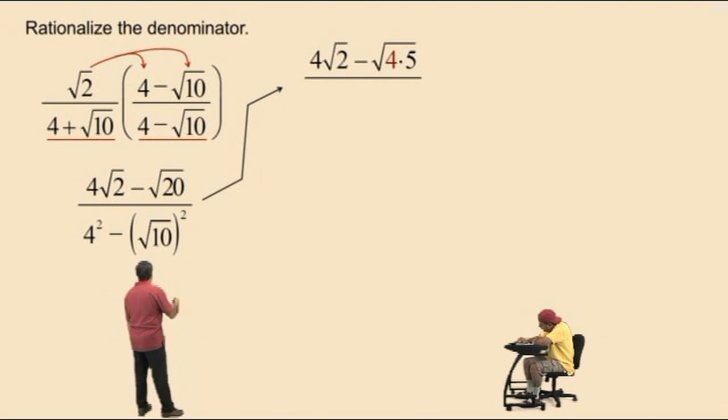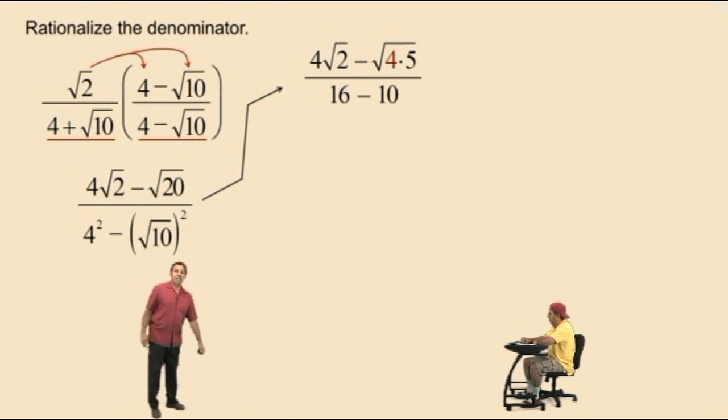Now in the denominator, we'll go ahead and square our quantities. Charlie, what's 4 squared? 16. That's right. And now, what's square root of 10 squared? 10. Very nice there, Charlie.